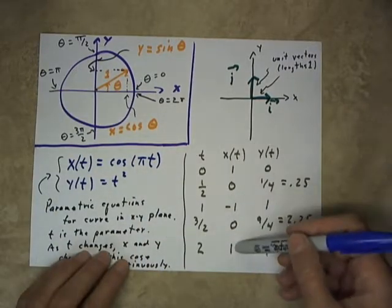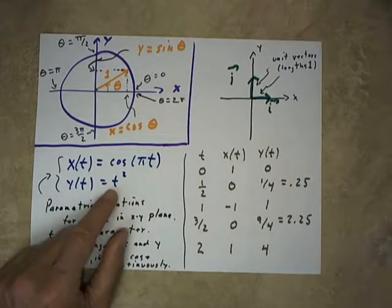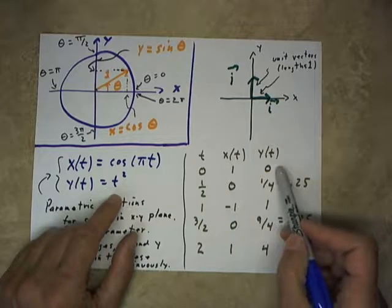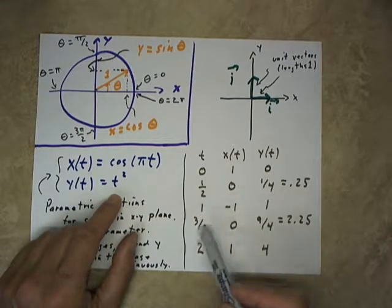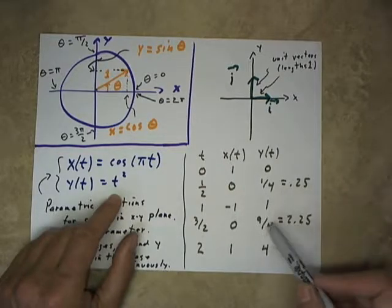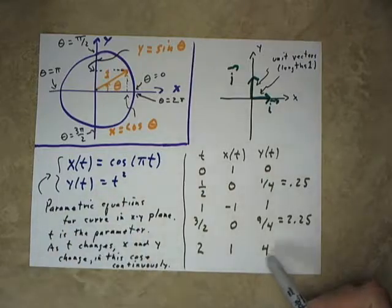So this is how our x-function changes in time. The y-function is, of course, a lot simpler. We don't need a picture. We can just square the numbers 0, 1/2, 1, 3/2, and 2, obtaining 1/4 or 0.25, 1, 9/4, which is 2.25, and 4.